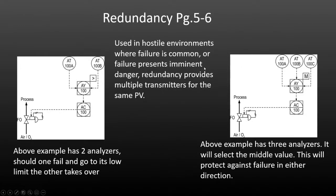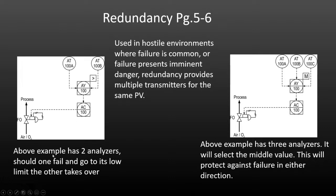Redundancy is one of the more common applications for selective control. In hostile environments where failure is common or could pose imminent danger, redundancy provides multiple transmitters for the same process variable, and one can take over should the other fail. There's an example where we have two analyzers — should one fail and go low, you can select the failure action to drive high or drive low depending on your process. In this case, should the analyzer fail, it's going to drive low and create a low signal.